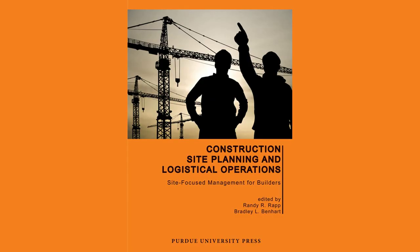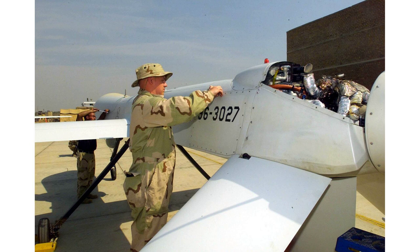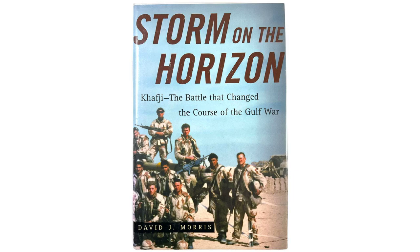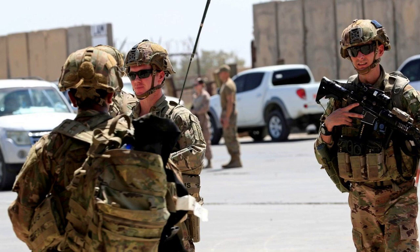The ground offensive was supported by extensive logistical operations, ensuring a constant supply of troops, equipment, and provisions. The coalition forces also made use of advanced reconnaissance and surveillance technologies to gather intelligence and maintain situational awareness. As the coalition forces advanced, they encountered fierce resistance from Iraqi troops, particularly during the Battle of Kafji. However, the coalition's superior training, equipment, and coordination allowed them to overcome these challenges and continue their advance.